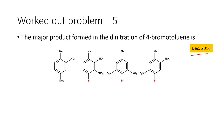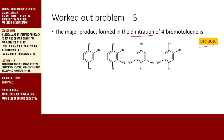Let us move on to the next problem, which appeared in December 2016. Here, the major product formed in the dinitration of 4-bromotoluene — the 4-bromotoluene is nitrated, but not mononitration; it is dinitration. We have to find out what is the product from options A, B, C, and D.